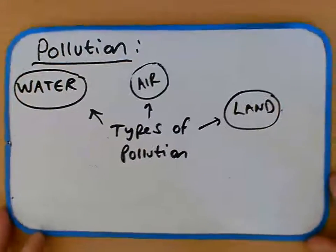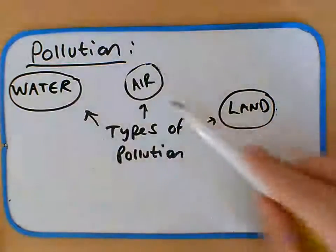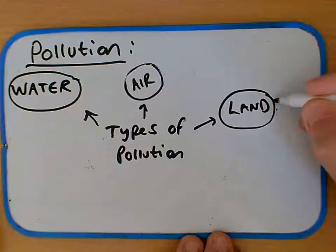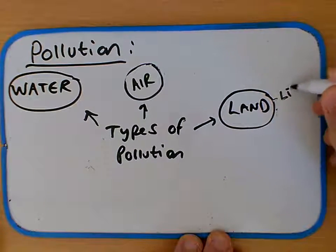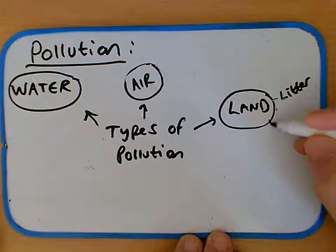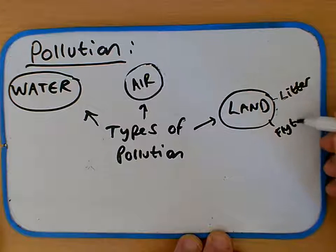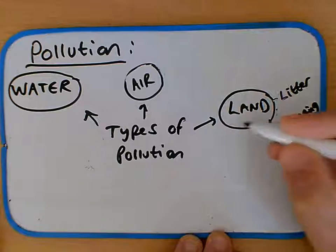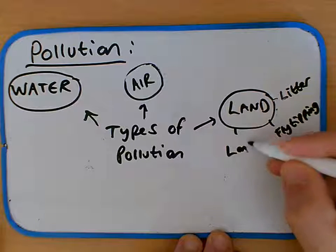So there are three types of pollution: pollution of the water, the air, and the land. Now, land pollution can include things like litter and fly tipping, also things like landfill.